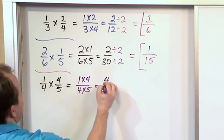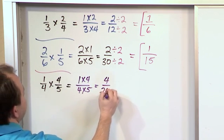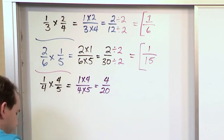4 times 5 on the bottom. So 1 times 4 gives us 4. 4 times 5 gives us 20. And that's basically the answer.